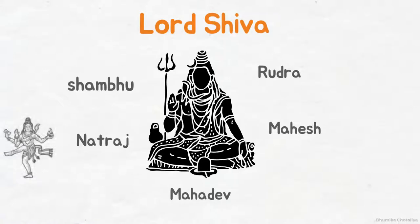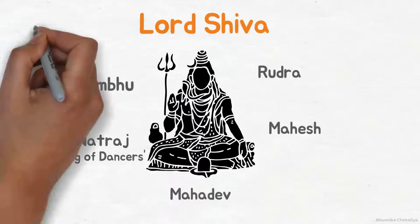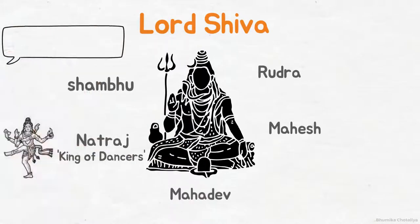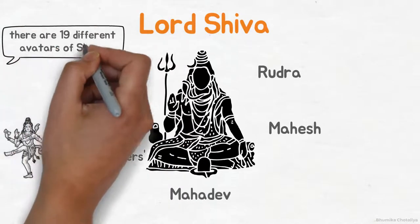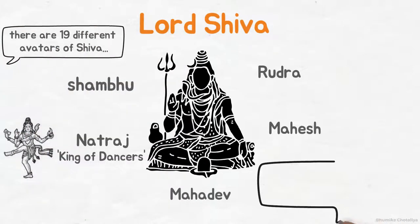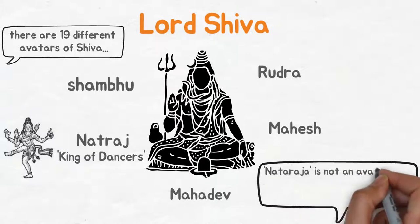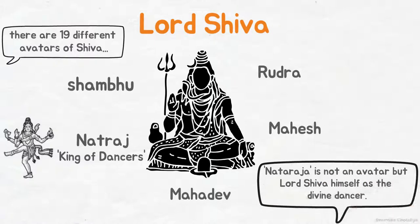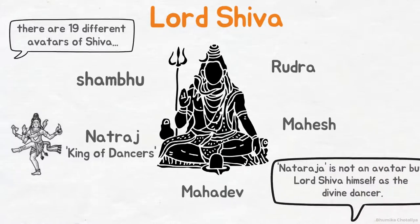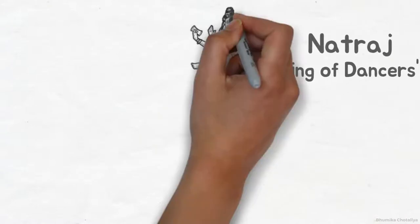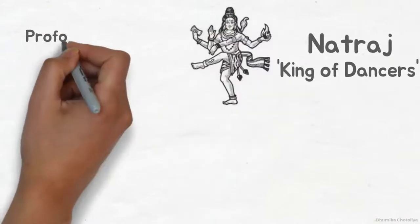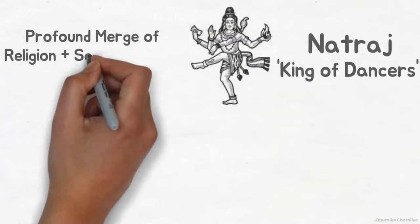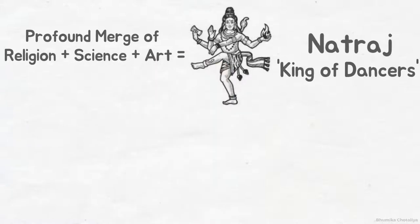Shiva's form of Nataraj is symbolic of the cosmic dance of creation and destruction. The term Nataraj means King of Dancers. While there are 19 different avatars of Shiva, Nataraj is not an avatar but Lord Shiva himself as the divine dancer. The symbolism of Nataraj is a unique yet profound merge of religion, science and art as one.